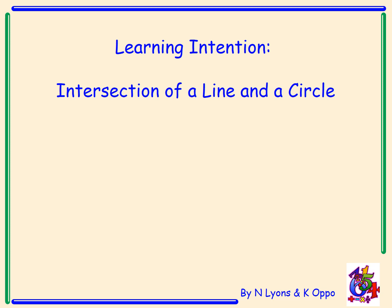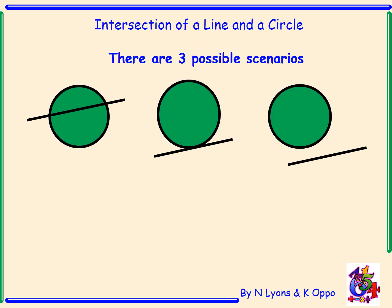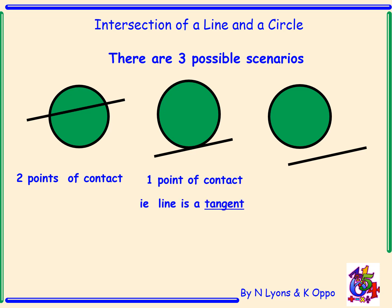Today we are going to learn about the intersection of a line and a circle. The National 5 essential skills are substitution, simultaneous equations, and finding the discriminant. There are three possible scenarios for the intersection of a line and a circle: two points of contact, one point of contact meaning the line is a tangent, or no points of contact.